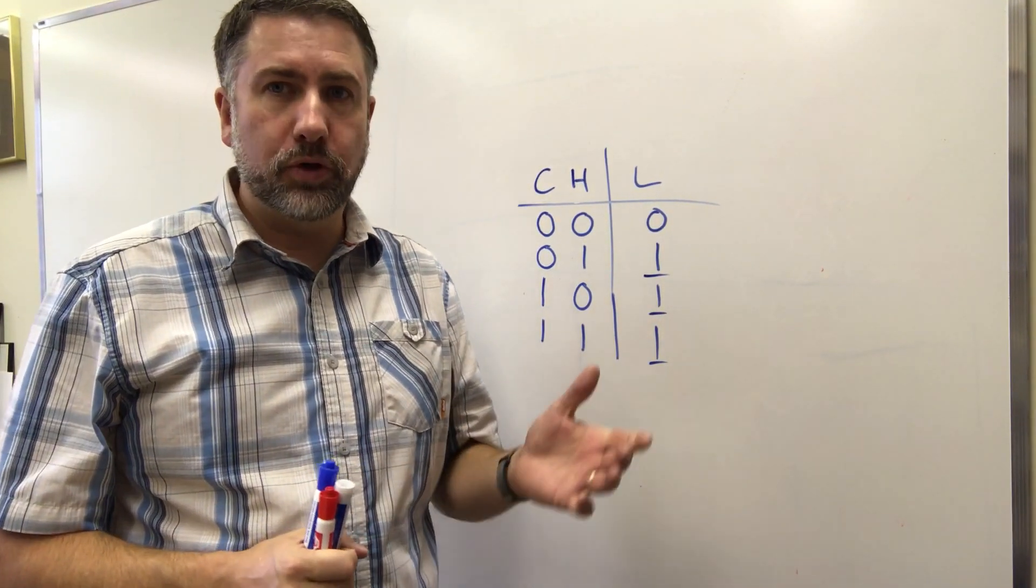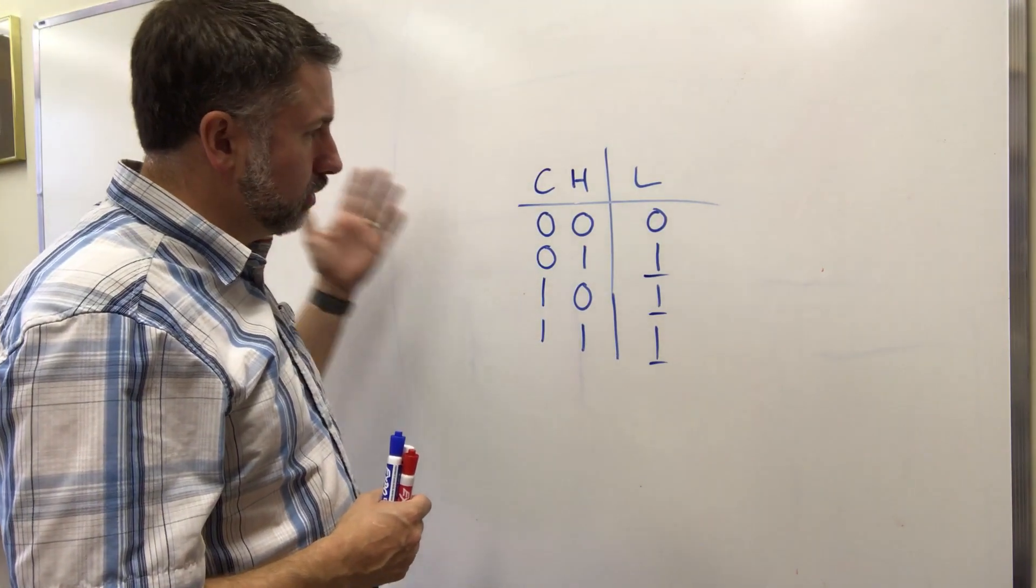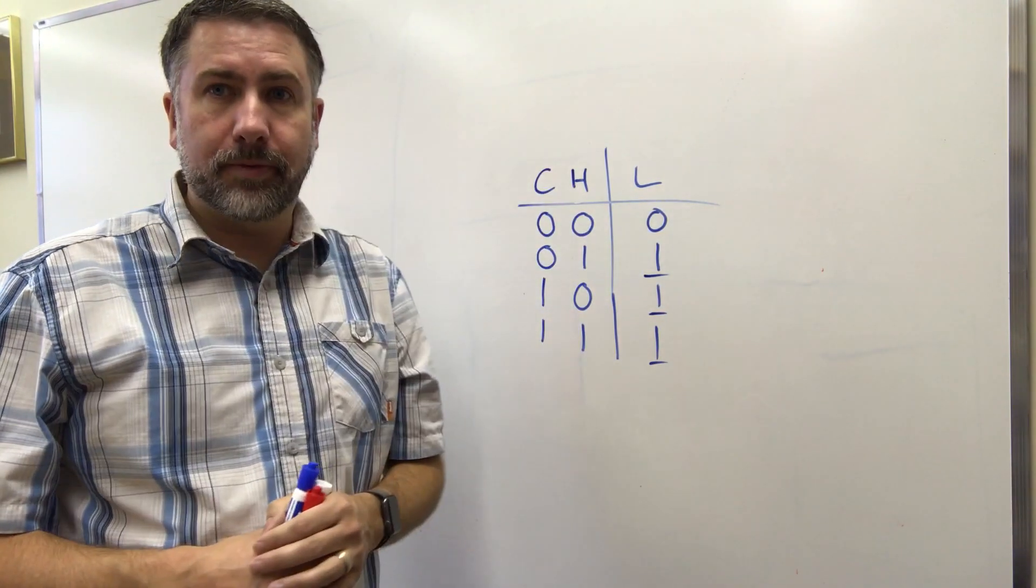Last time we walked through an example that showed how to get a function, equation, circuit from a truth table.